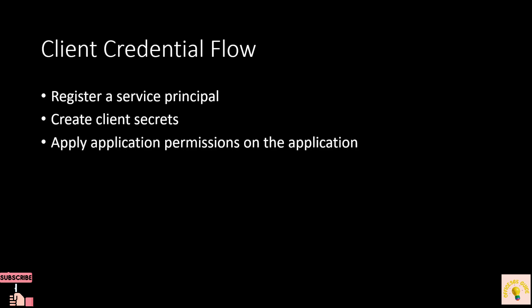Welcome to the second part of the Graph API tutorial. So far we have seen different methods of connecting to Graph API using Graph Explorer and PowerShell SDK. Next we will talk about connecting using something called client credential flow. In client credential flow, we are required to register an application, also known as a service principal, and then create a client secret. We will also apply some permissions on the application itself, like User.Read.All or Write.All.